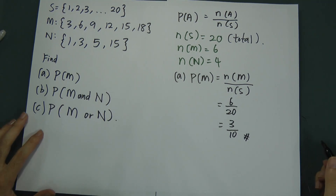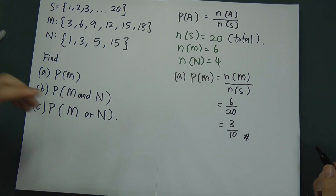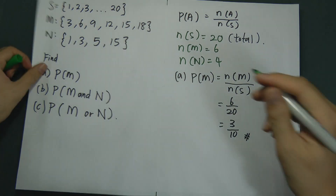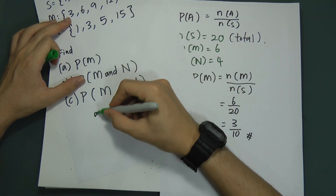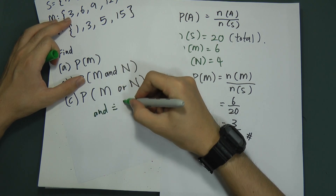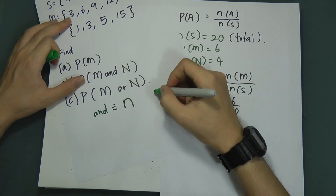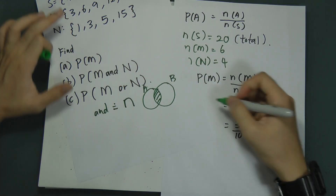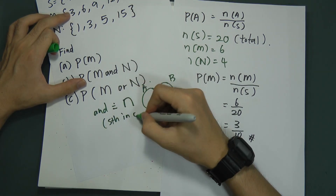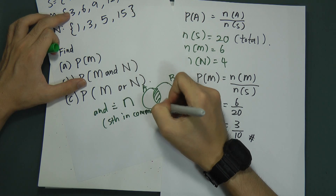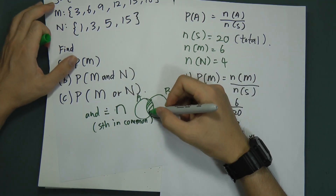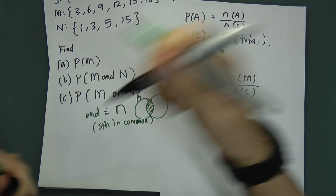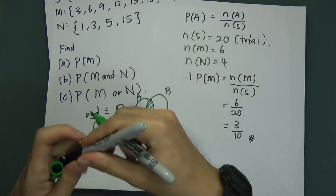In the probability chapter, you need to understand what 'N' and 'O' mean. The 'N' symbol here means intersection. Do you remember the set chapter? Intersection means A in the set B — it means something both of them have in common; they share something. So 'N' stands for intersection.